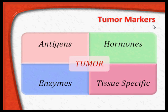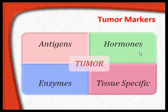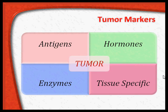Let us elucidate the nature of tumor markers. Tumor markers in general can be antigens secreted by the tumor, or antigens presented by the tissue where the tumor occurs. There may be hormones, as in thyroid cancer — excess thyroxine or medullary carcinoma with excess calcitonin — or there may be enzymes or tissue-specific products. So tumor markers can be antigens, hormones, enzymes, and tissue-specific factors, among other types.